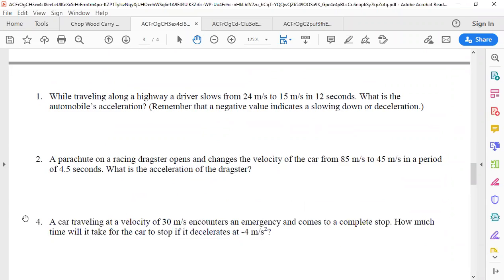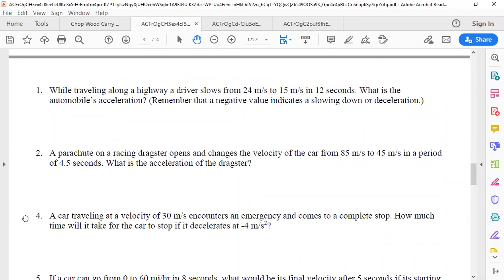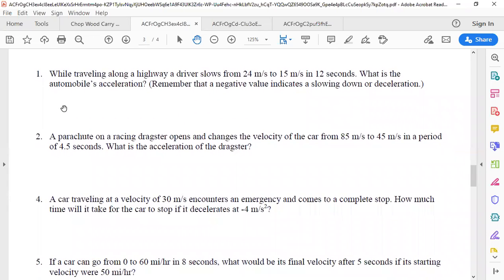So we're going to look at problem number one. It says, while traveling along a highway, a driver slows from 24 meters per second to 15 meters per second in 12 seconds. What is the automobile's acceleration? It says to remember that a negative value indicates slowing down or deceleration. So we want to know what its deceleration was actually. So we would look at our example up above.